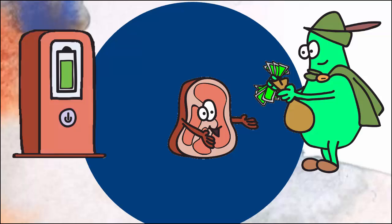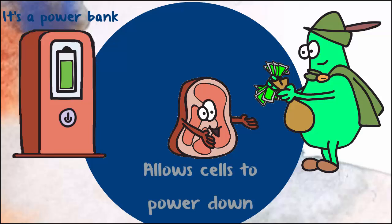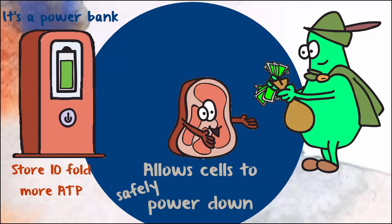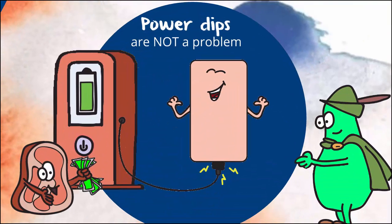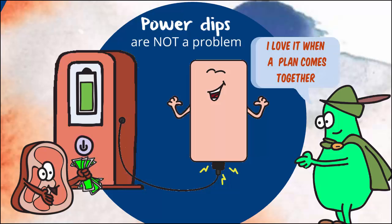The phosphocreatine just sits there holding the energy. This is especially useful because if supplies of ATP exceed the cell's requirements, cells opt to power down, since generating more power than is needed is inherently wasteful and potentially risky. The phosphocreatine system allows a cell to expand the ATP store by ten-fold. If the power supply dips, creatine kinase immediately pulls the phosphate off, sticking it onto an ADP, so there is no interruption in power.